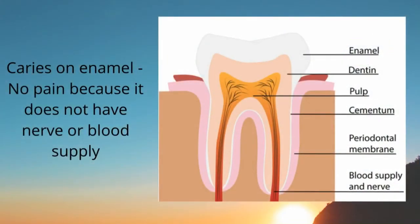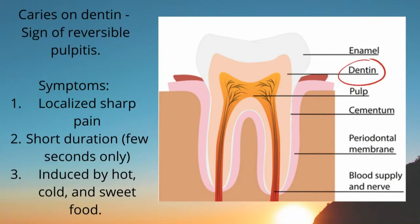If we have caries on the enamel there is no pain, because it does not have any nerve or blood supply. If we have caries on the dentine, it will be a sign of reversible pulpitis, because it receives its blood and nerve supply from the pulp. The symptoms the patient may experience are localized sharp pain of short duration, lasting only a few seconds, which can be induced by hot, cold, and sweet food.